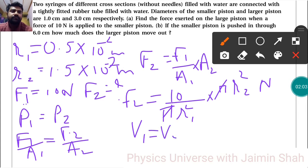So length into area, that is volume. Similarly here, length into area. Larger piston, how much does the larger piston move out? So here also we need to find L2. L2 is equal to L1 A1 upon A2.